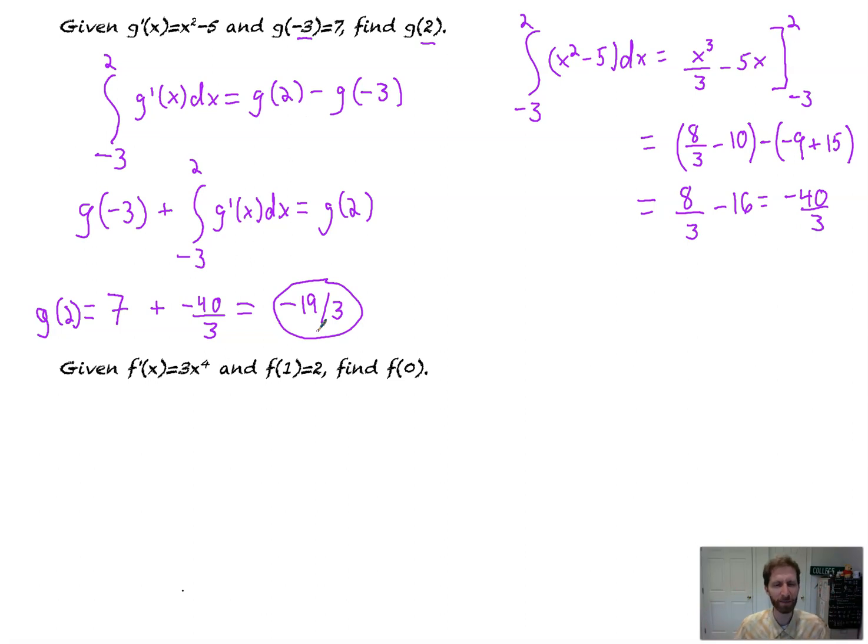I love doing that. It's awesome. I'm going to give you another problem similar to it, but this time a little bit of a difference, but you'll see it's still using the fundamental theorem. We're given f prime is equal to 3x to the fourth and f of 1 is 2. Find f of 0.